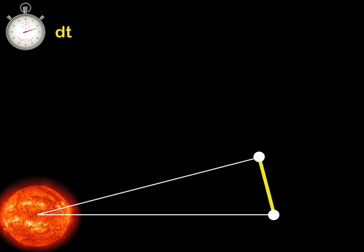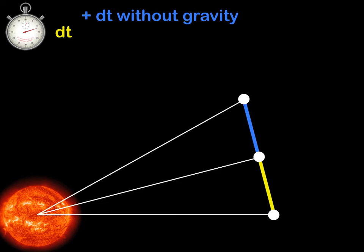Consider the following: we have the Sun at the center here going to exert a gravitational influence on the planet, which is this white dot. With this stopwatch, I'm saying that an infinitesimal amount of time dt has passed between these two positions. In that amount of time, the planet went from the bottom position to the top one. Now, let an equal amount of time pass again.